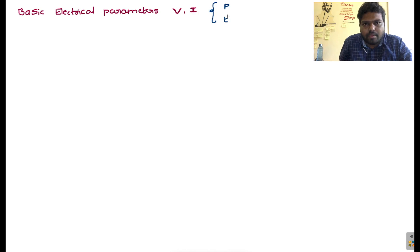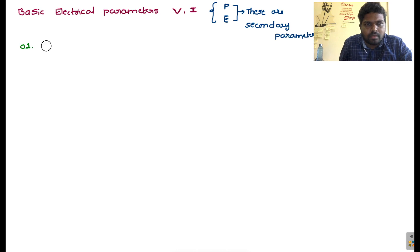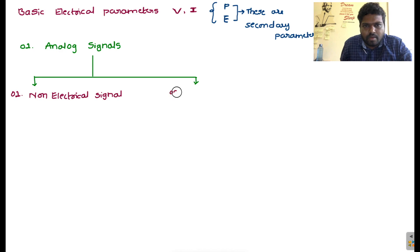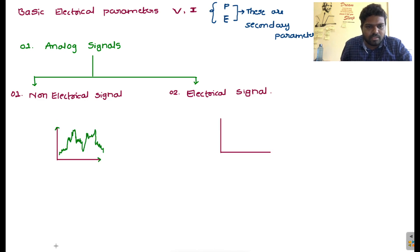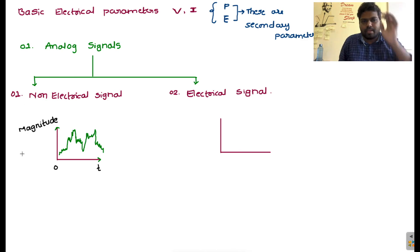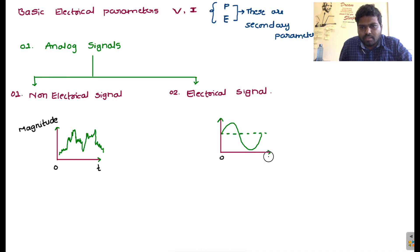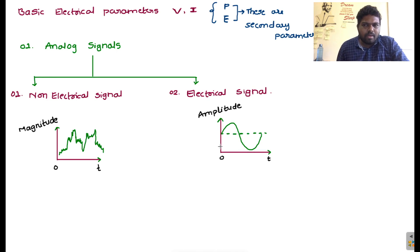The basic electrical parameters are voltage and current; power and energy are the secondary parameters. Analog signals are classified into two types: non-electrical signals and electrical signals. For a non-electrical signal, the x-axis represents time and the y-axis represents magnitude. For an electrical signal, the x-axis also represents time and the y-axis represents amplitude. Magnitude and amplitude mean the same thing, but the terminology differs between electrical and non-electrical domains.